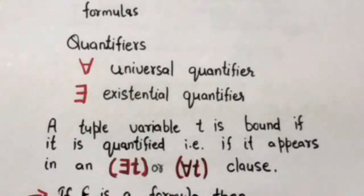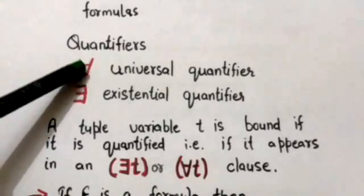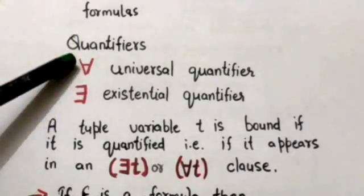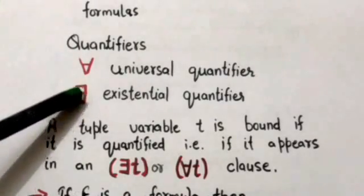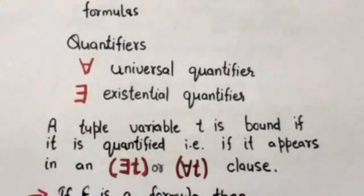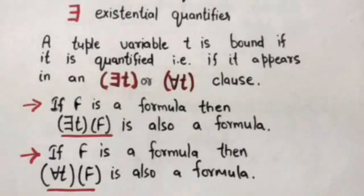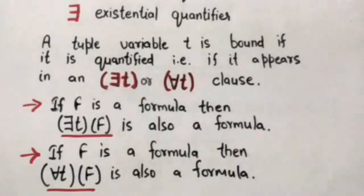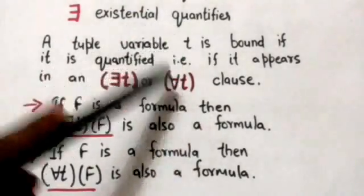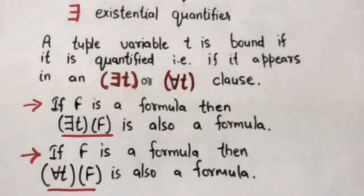A tuple relational calculus formula can contain two special symbols called quantifiers. One is the universal quantifier and the other is the existential quantifier. A tuple variable t is bound if it is quantified, meaning if it appears in a quantified clause; otherwise it is free.